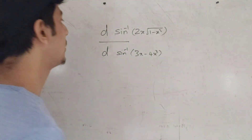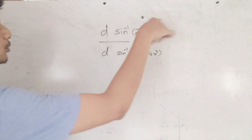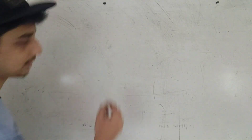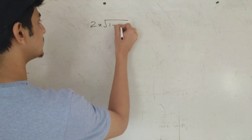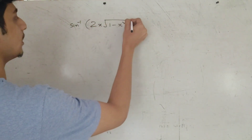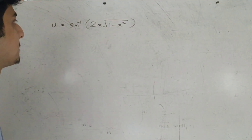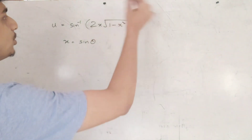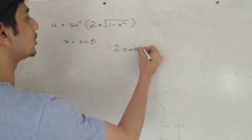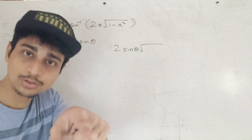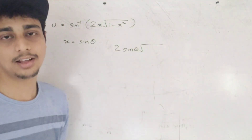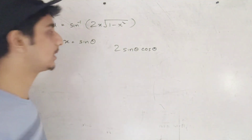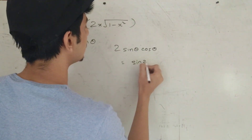Put x equal to — we will write the numerator. So x equals sin theta. Then 2 sin theta root 1 minus sin square theta equals 2 sin theta root cos square theta equals 2 sin theta cos theta, which is sin 2 theta. So sin inverse of sin 2 theta equals 2 theta.